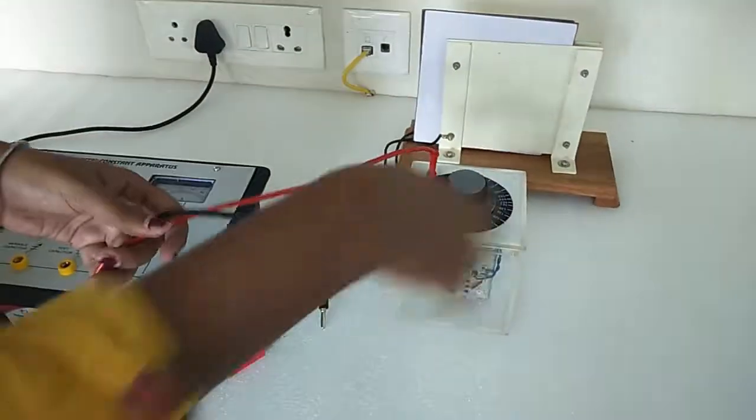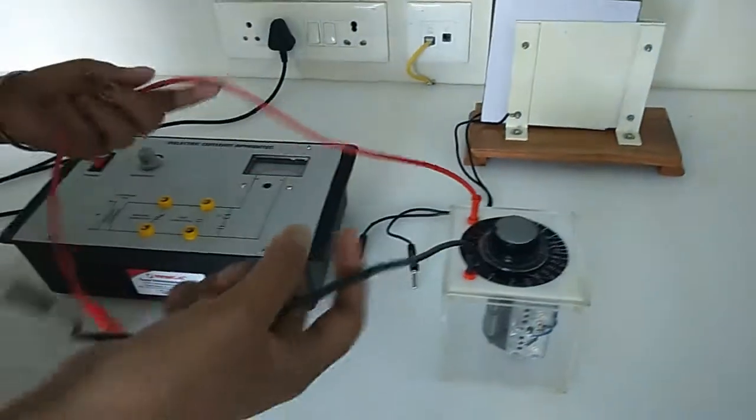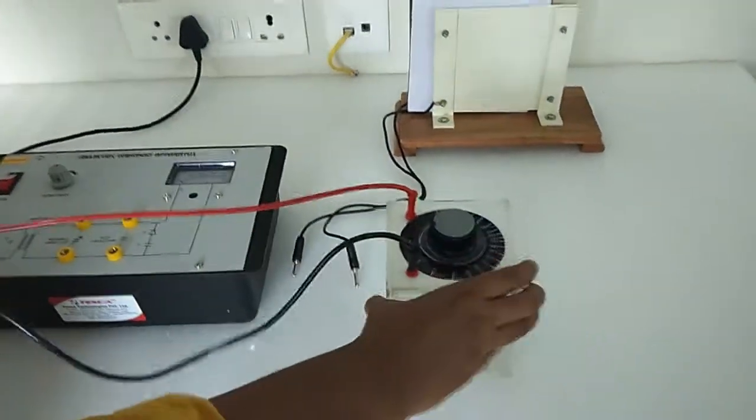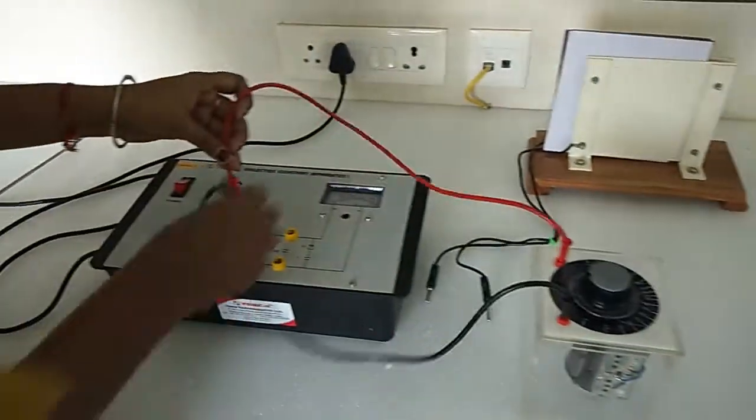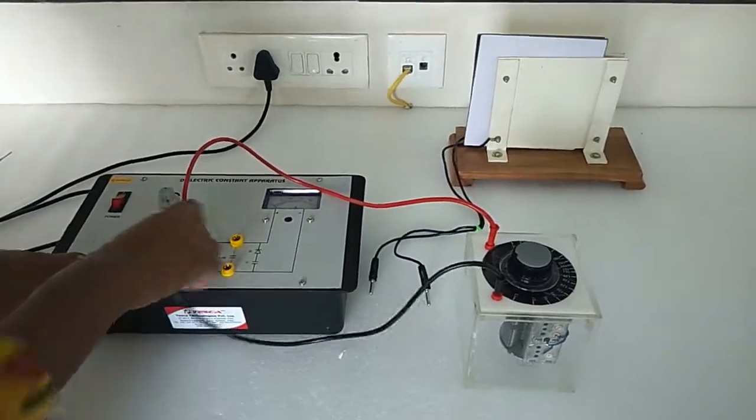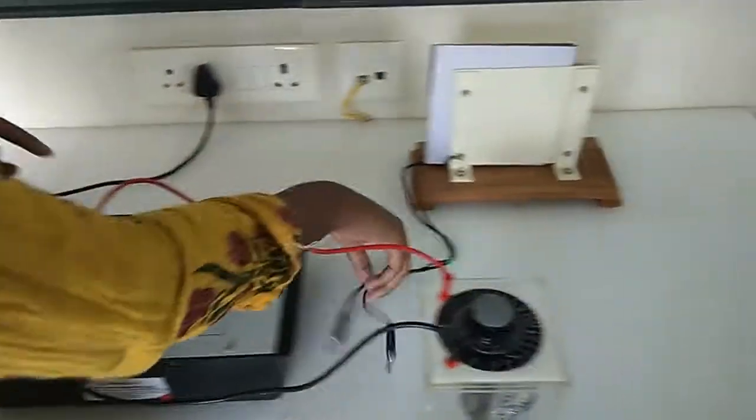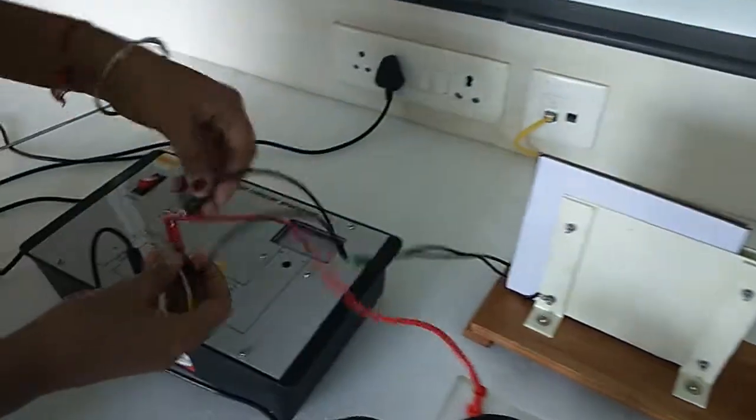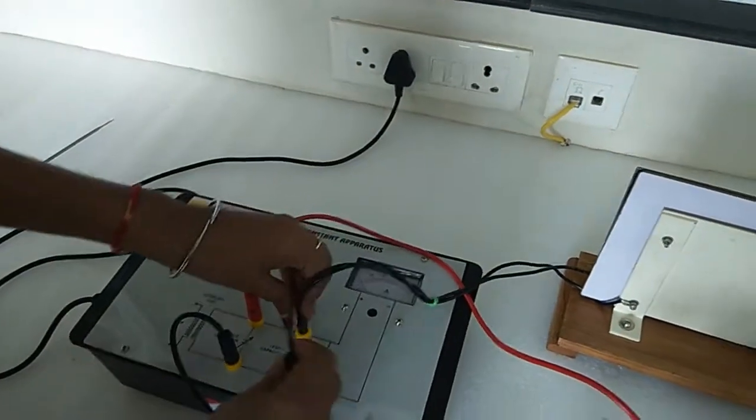So first we are going to connect the variable capacitor in parallel to the test capacitor in this circuit. This is marked as variable capacitor. Connect this to the test capacitor socket.